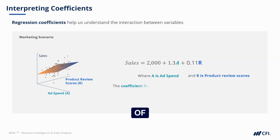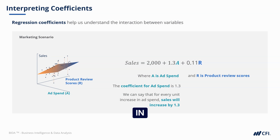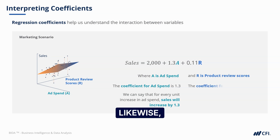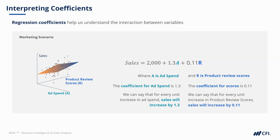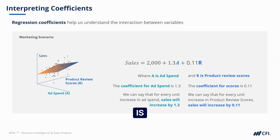The coefficient of ad spend is 1.3, so for every unit increase in ad spend, sales will increase by 1.3. Likewise, the coefficient for review scores is 0.11, so for every unit increase in product review scores, sales will increase by 0.11. It's still a positive relationship, but the coefficient is smaller.